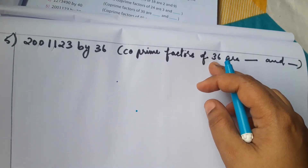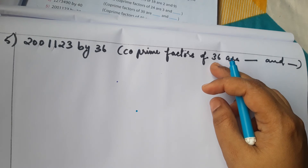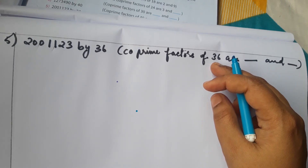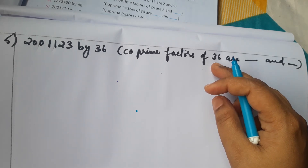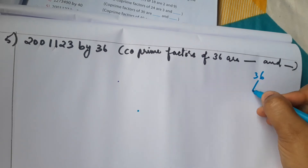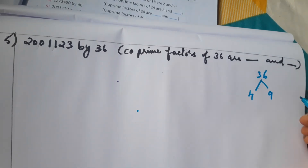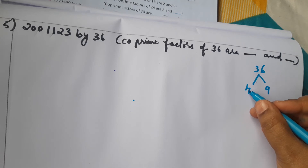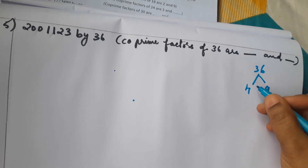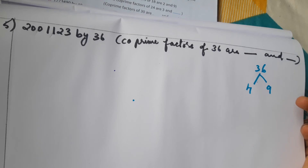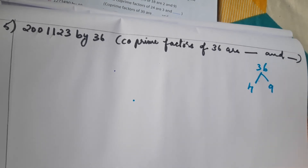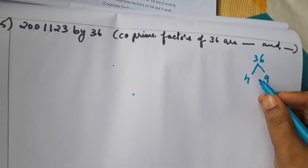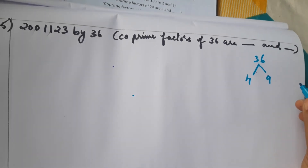Co-prime factors of 36: 6 sixes are 36 but 6 and 6 are not co-prime since both are even. 4 nines are 36, so we take 4 and 9. We can take composite or prime numbers as co-prime factors — twin prime means both must be prime, but co-prime just means HCF is 1. HCF of 4 and 9 is 1, so 4 and 9 are co-prime numbers.